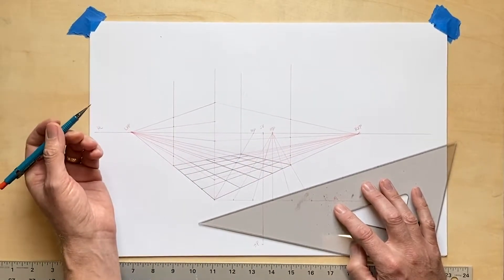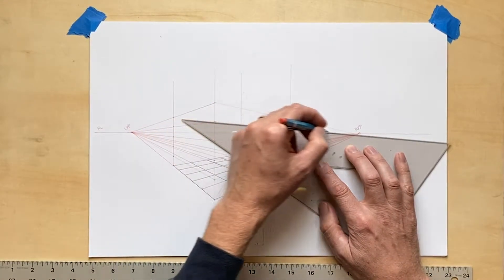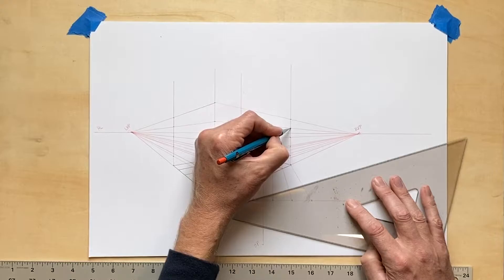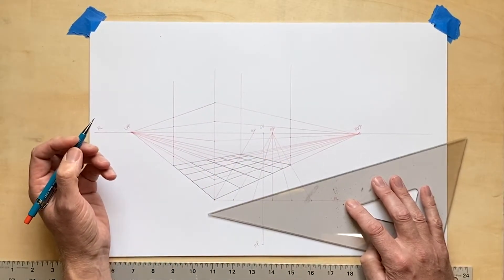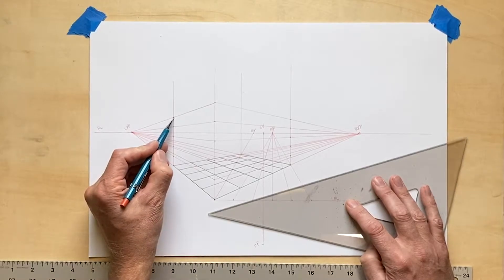You can see that as those lines that measure to the vanishing points intersect the transversals of the back edges, I mark points. These are new intersections that will be helpful in the next step.